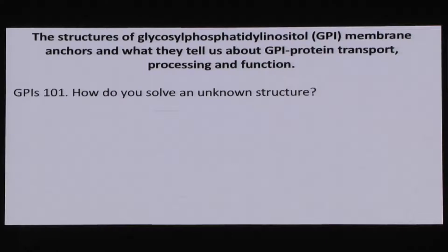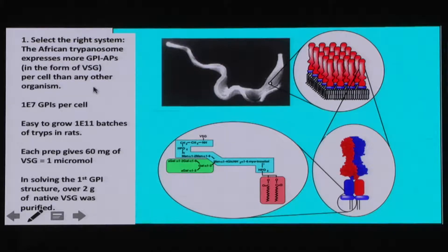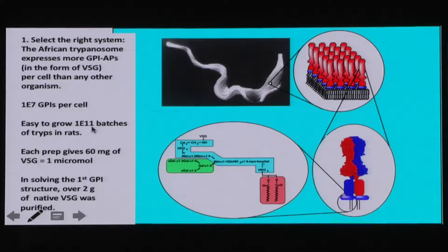So, structures of GPI anchors — GPI 101: how do you solve an unknown structure like a GPI anchor? The trick is to select the right system. I was lucky to be working with George Cross on the African trypanosome that causes sleeping sickness. It expresses more GPI-anchored proteins — its variant surface glycoprotein coat — than any other organism: 10 to the power 7 GPI-anchored VSG molecules per cell. Infecting a dozen rats gives about 10 to the 11 parasites, yielding about a micromole of GPI anchors per preparation.